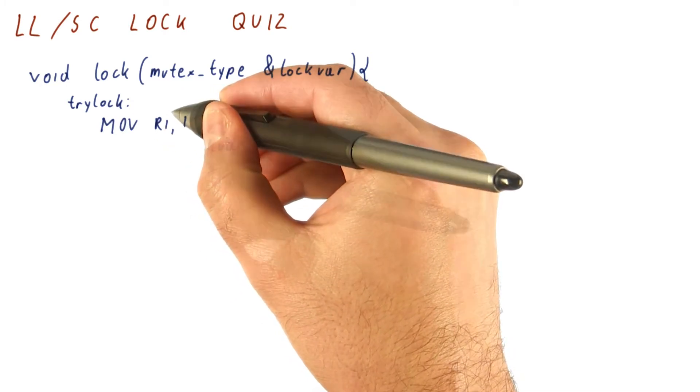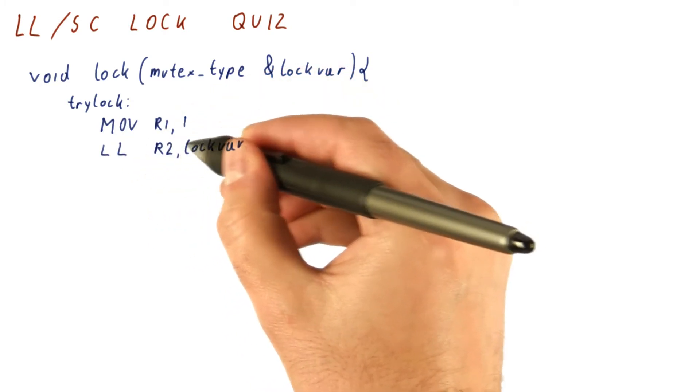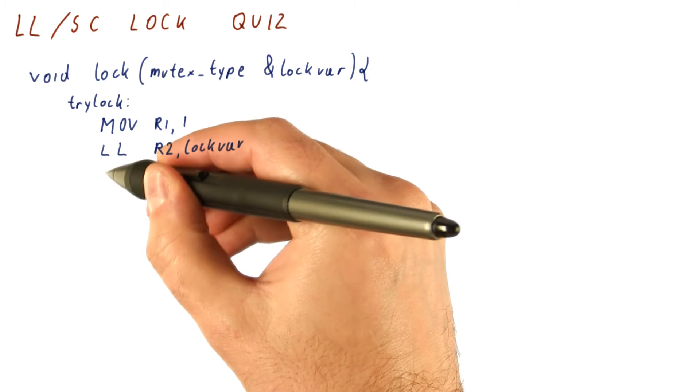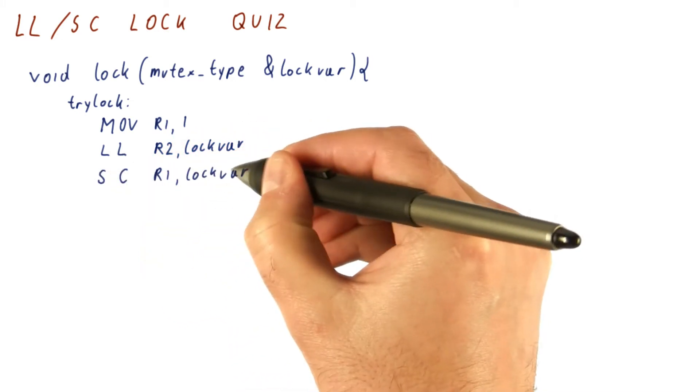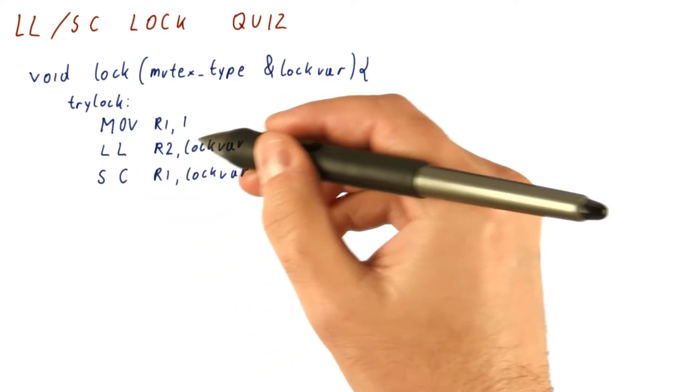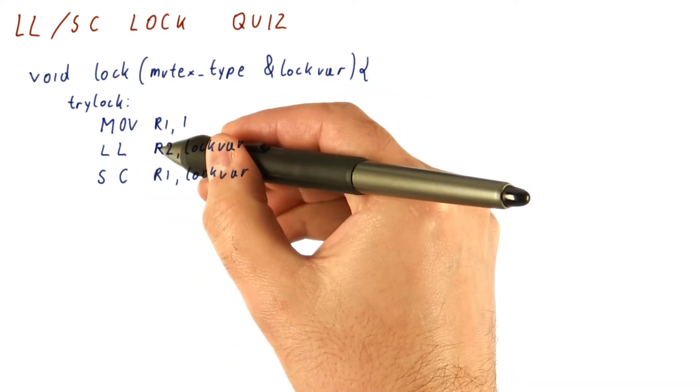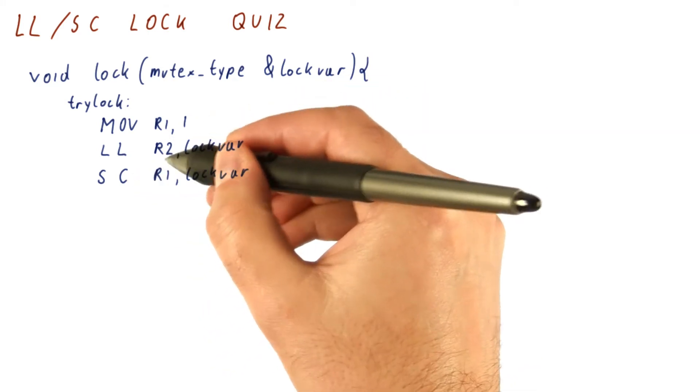Put one in R1, load the current value of lockvar into R2 using a load link, and then store R1 into lockvar using store conditional. So the idea is that we load the current value of the lock and then we store a 1 there.